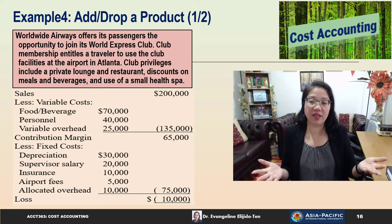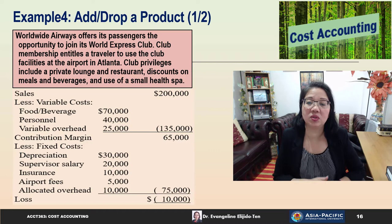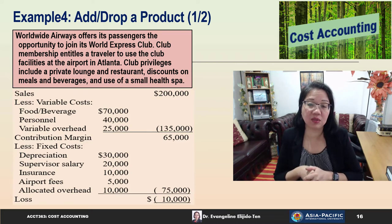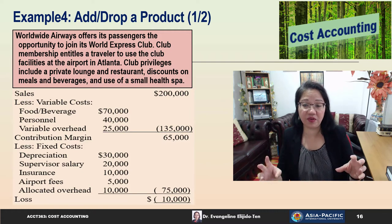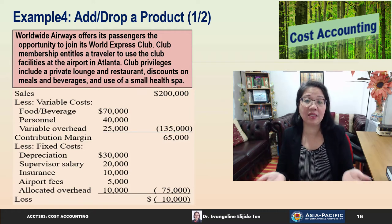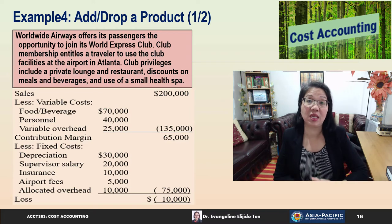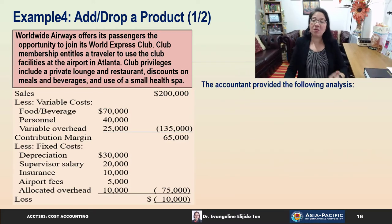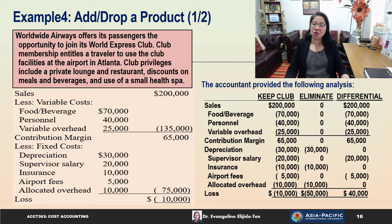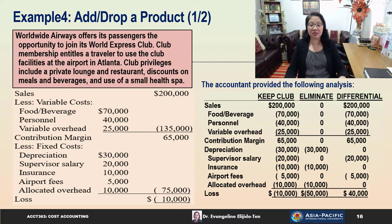We are provided with an income statement: sales of $200,000, variable cost of $135,000, giving a contribution margin of $65,000. But when they deduct all fixed costs of $75,000, it looks like this club is losing $10,000. However, the accountant provided the following analysis — it looks like not all fixed costs will be avoided if they decide to drop this particular service or product line.